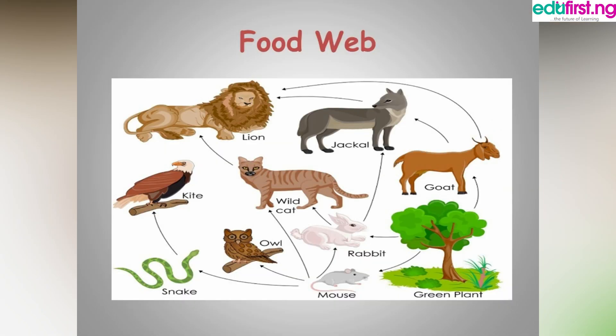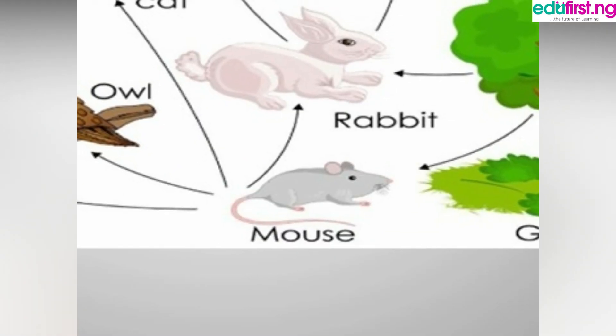The previous examples were food chains — a straight-line energy transfer. The food web is like an interconnection, like a web. Starting from the mouse: the mouse is eaten by the snake, the snake is eaten by the kite.